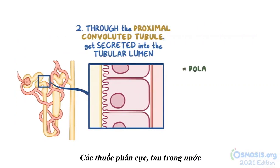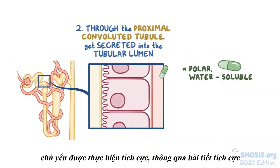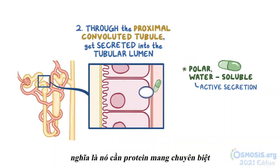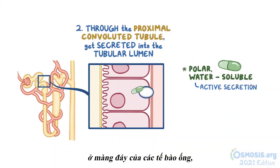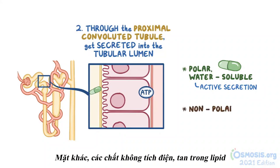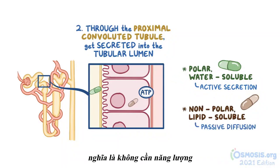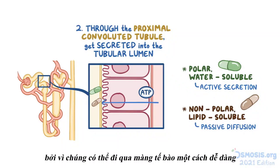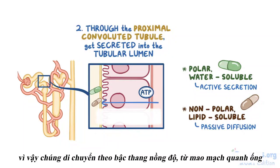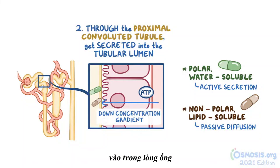For polar, water-soluble medications, this is mainly done actively through active secretion, meaning it requires specific carrier proteins on the basolateral membrane of the tubular cells, which use ATP for energy. Nonpolar, lipid-soluble drugs, on the other hand, are secreted into the proximal tubule via passive diffusion — without requiring any energy — because they can pass through cell membranes easily, moving down their concentration gradient from the paratubular blood into the tubular lumen.